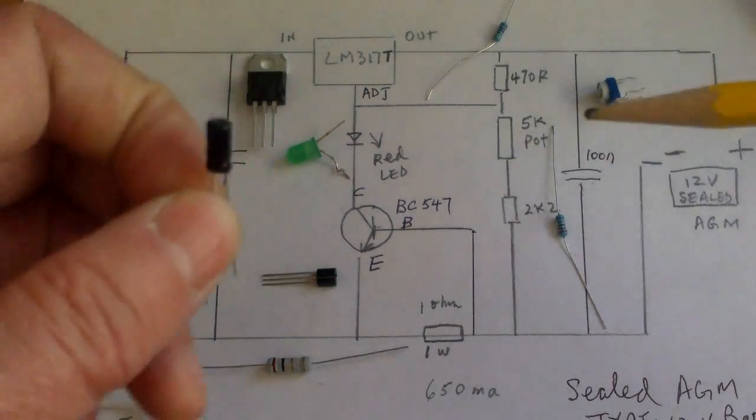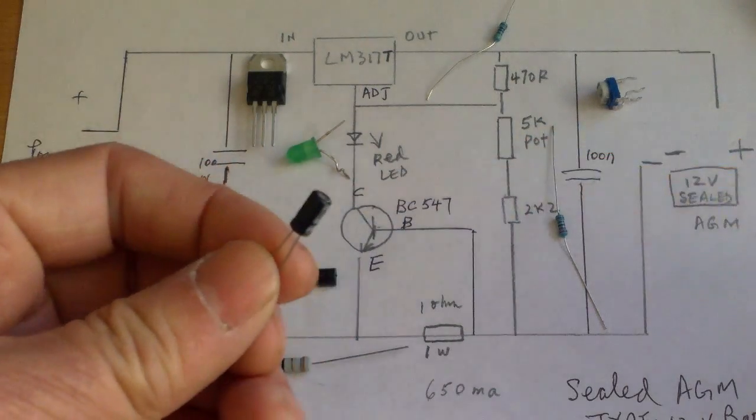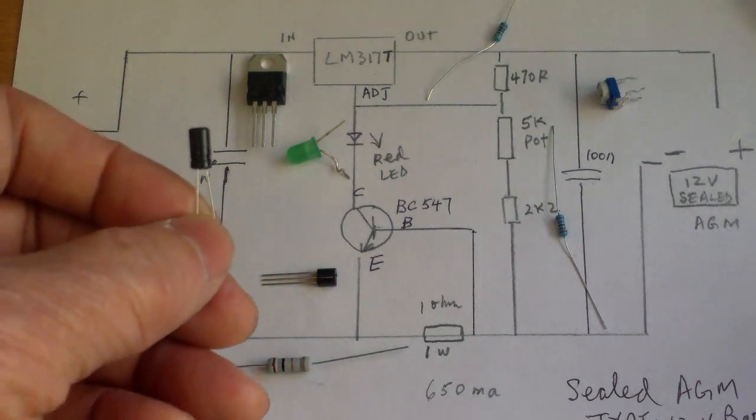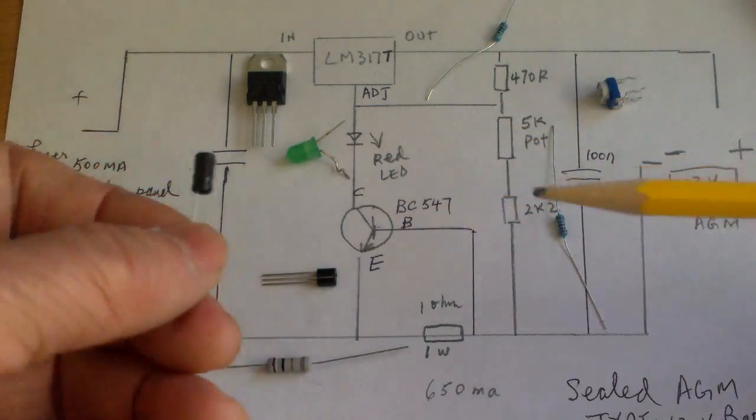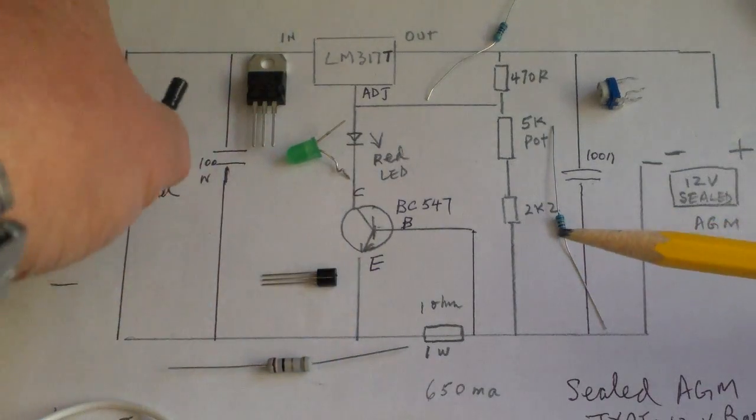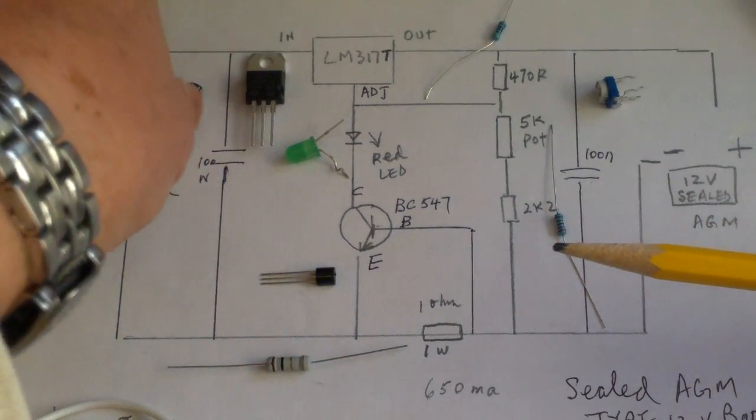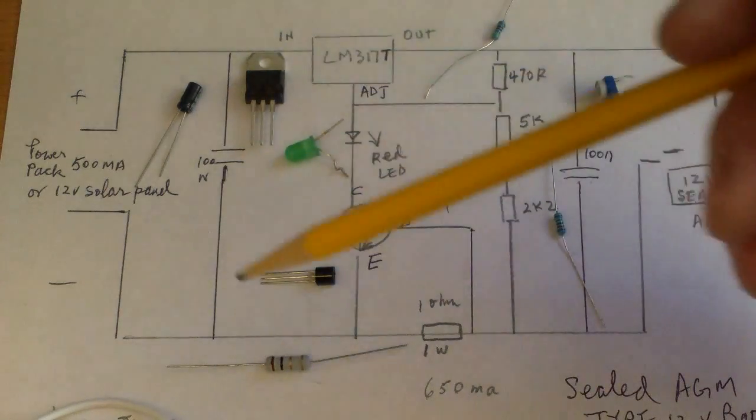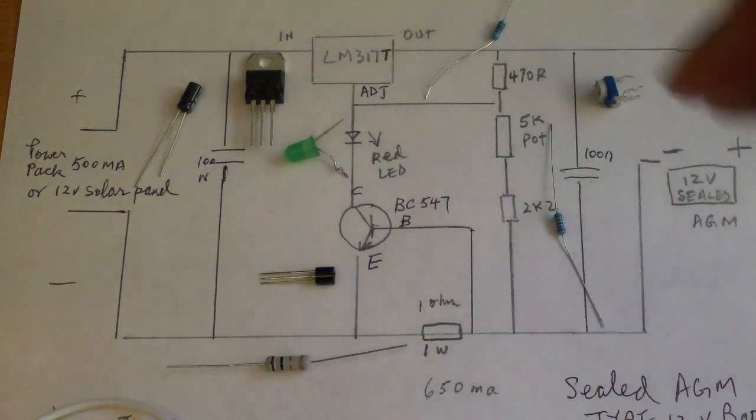I'm going to see if I can use this one here, an electrolytic. This is 1 microfarad. So this is not what the circuit calls for. I hope it will work if I use this. I think the capacitor is basically to smooth out the voltage.